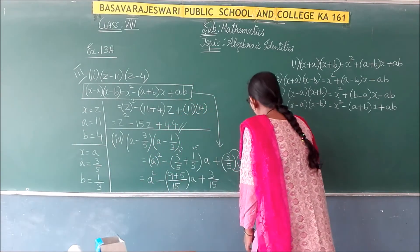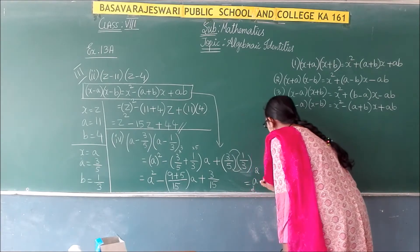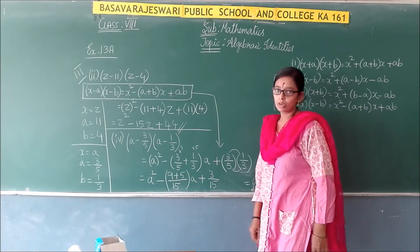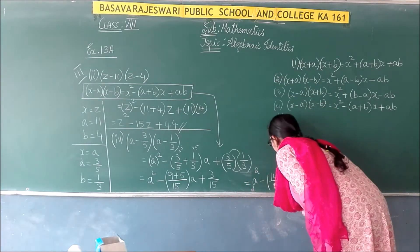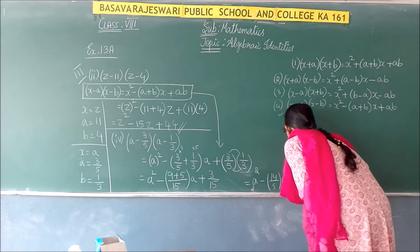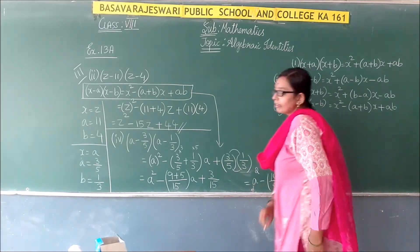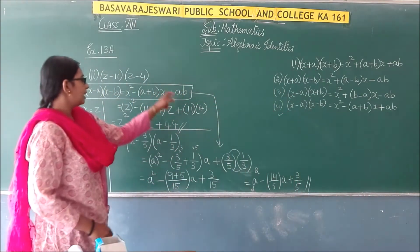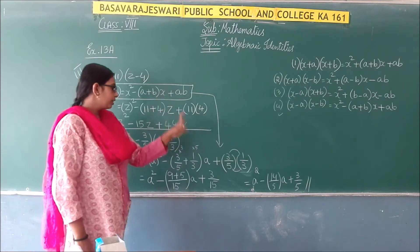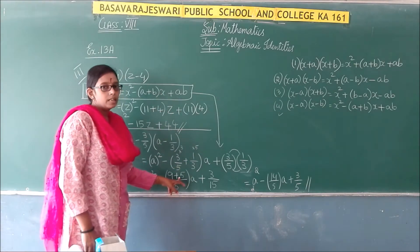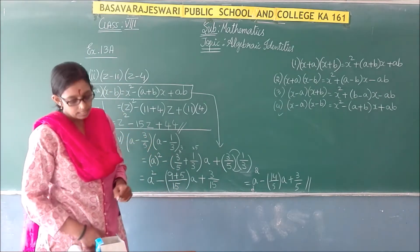Our answer is a² minus 14/15 · a plus 3/15. For multiplication, we multiply numerators and denominators directly: 3/5 × 1/3 = 3/15 = 1/5. Write the identity, substitute the values of a and b. If the denominators are different, take the LCM; if the same, no LCM needed.